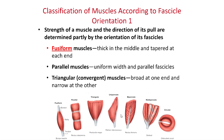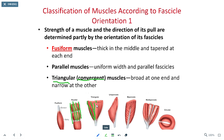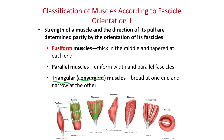As we look at fascicle orientation — or by extension, fiber orientation — parallel muscles have their fascicles more or less in the same orientation as each other. A classic example is the rectus abdominis. We could also have a triangular or convergent muscle, where fascicles start out with a broad shape and then merge to a single point. The classic example of a triangular muscle is the pectoralis major.